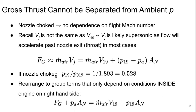And again, if our nozzle is choked, then P19 over P019 is known. And we can rearrange to group the terms that only depend on the conditions inside of the engine onto the right hand side, which is the gross thrust plus P0 times AN.